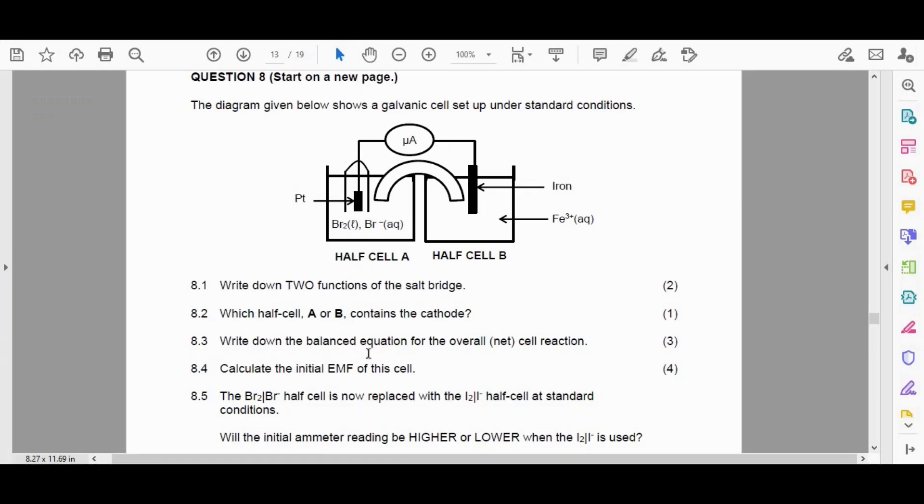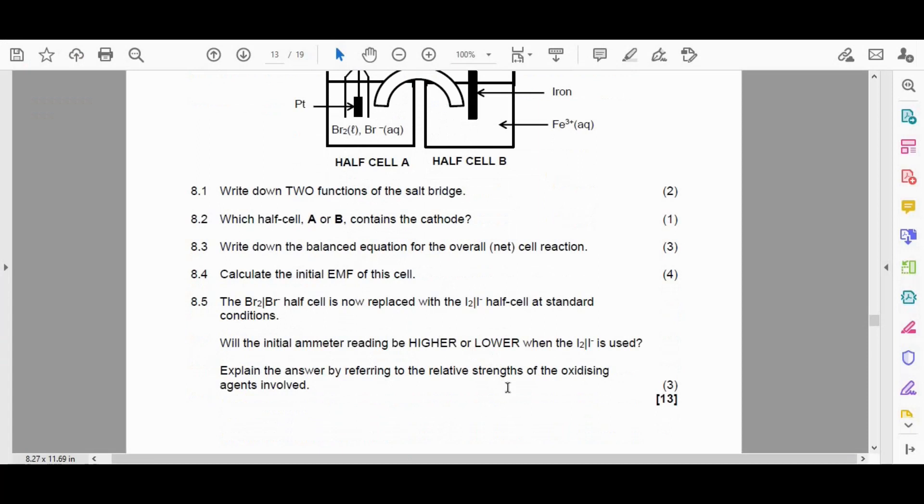8.5 seems to be the last question here. They say now that the Br2 minus half cell is now replaced with the iodine. I2 goes to I to the minus half cell at standard conditions. Write the initial amateur reading.